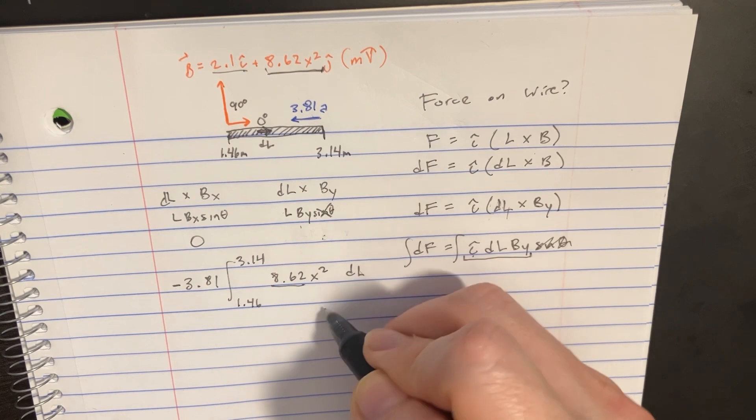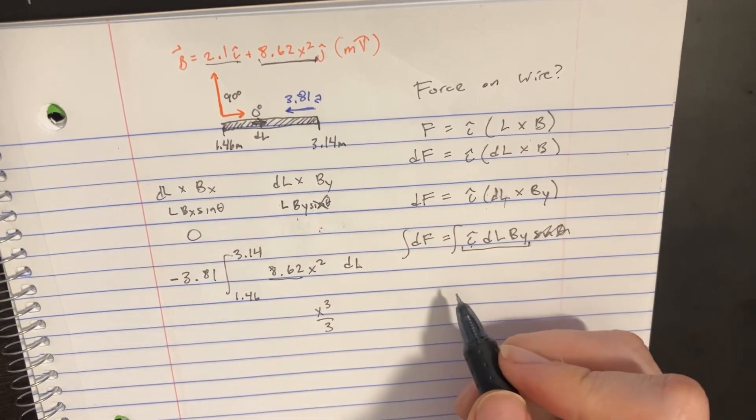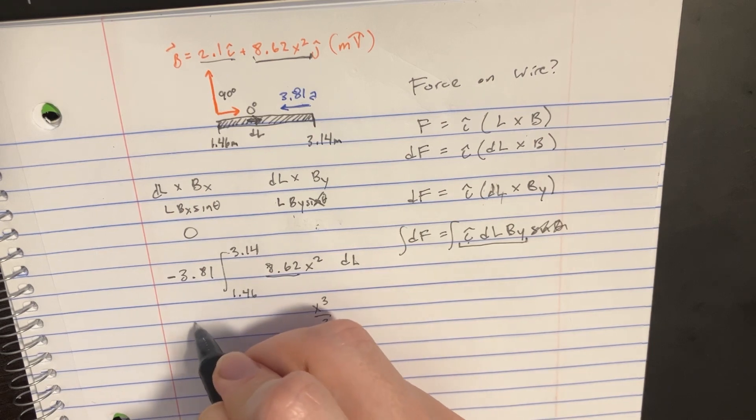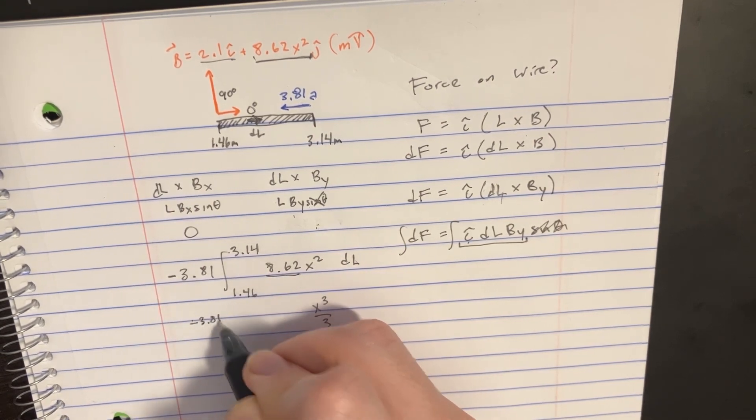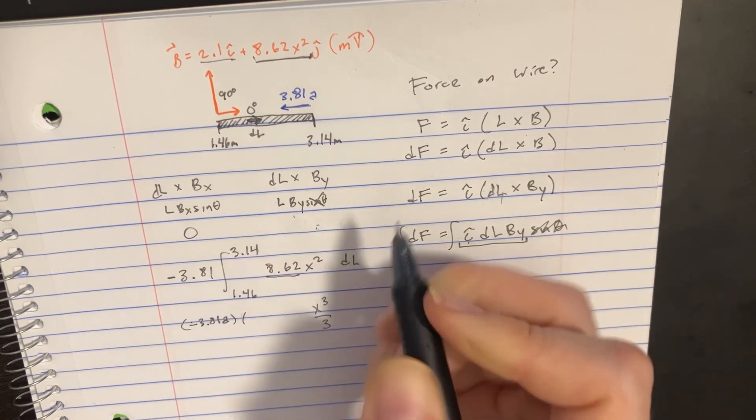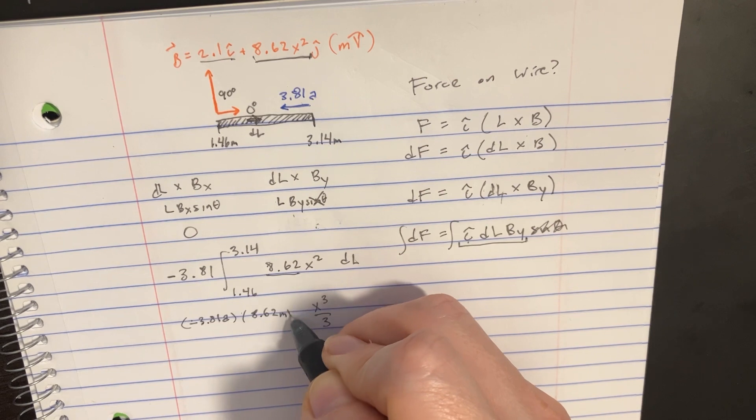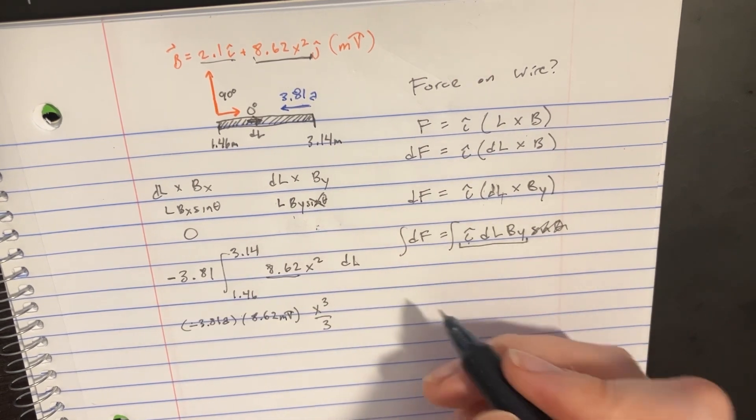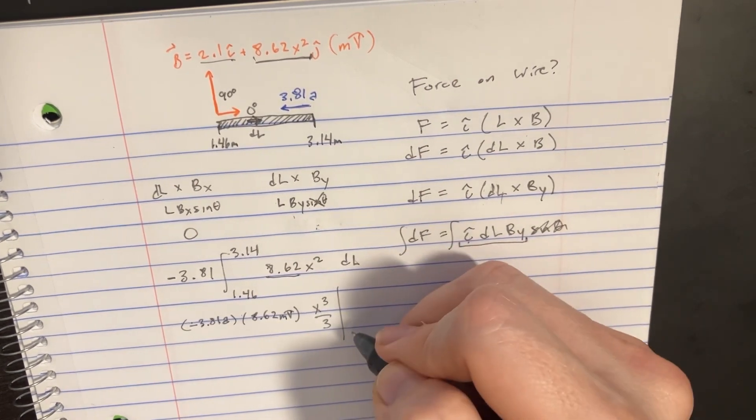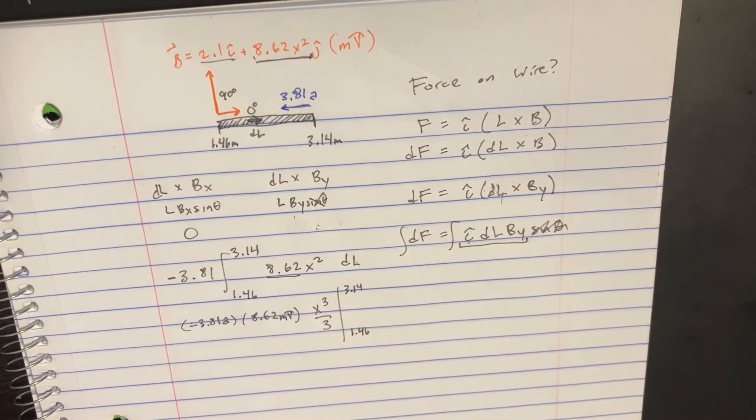We can pull this out as well. This is an easy integral - it's just x³/3. We've got two constants: negative 3.81 in amps and 8.62 in milliteslas. We're going from 1.46 to 3.14 meters. Nothing too crazy there.